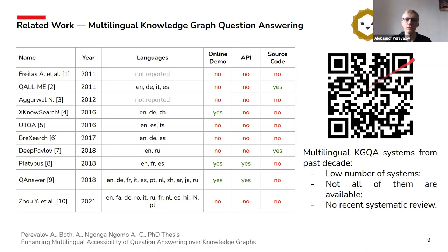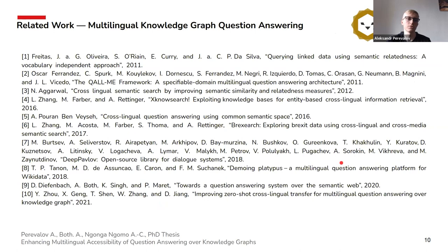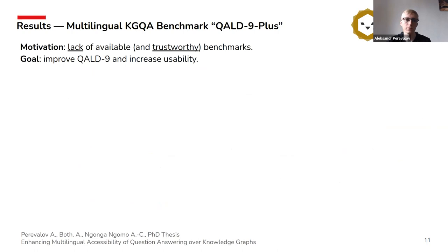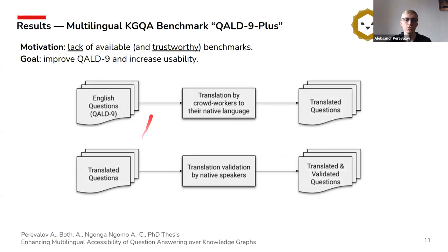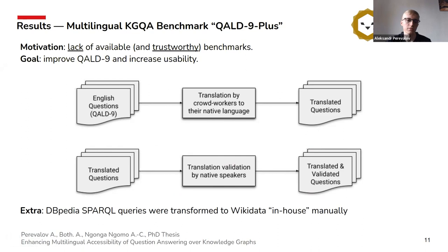So what are the results of our work so far? We started with creating a multilingual KGQA benchmark based on QALD-9. We improved this dataset and increased its usability by the following actions: we used the original English questions of QALD-9, translated them with the help of crowd workers and volunteers who were native speakers of different languages, and then other crowd workers validated these questions — also native speakers of the corresponding languages. In this regard, we got a completely new dataset in many languages. We also transformed DBpedia SPARQL queries to Wikidata.